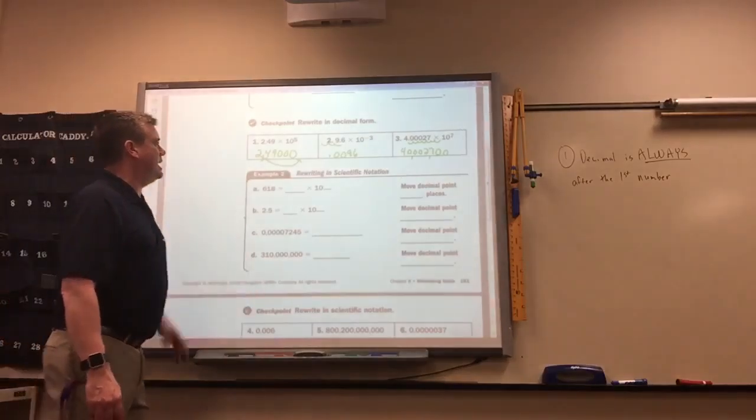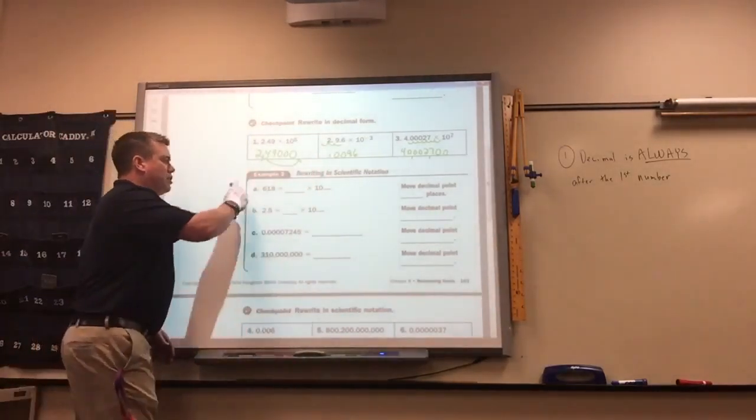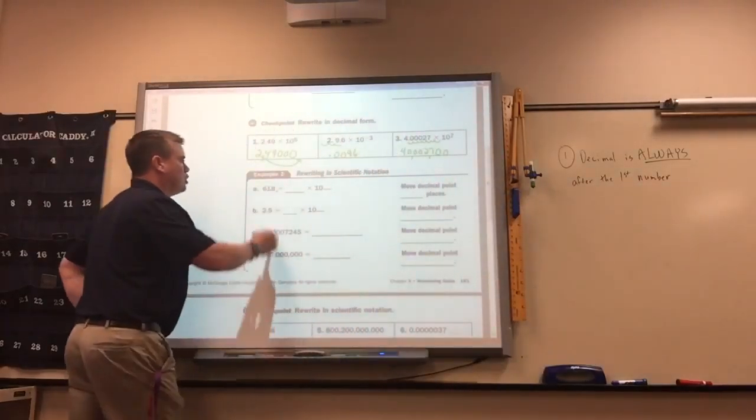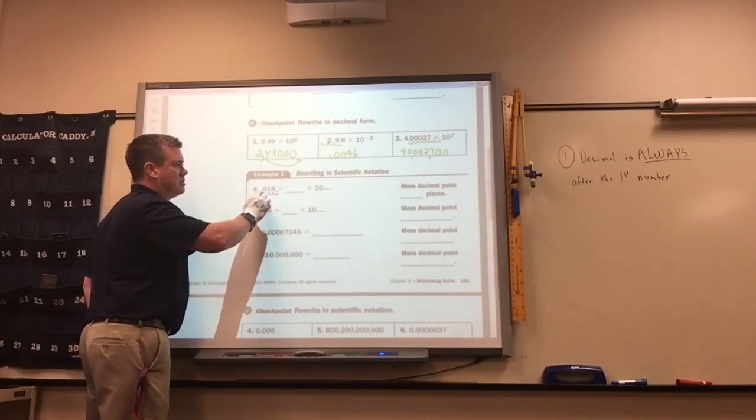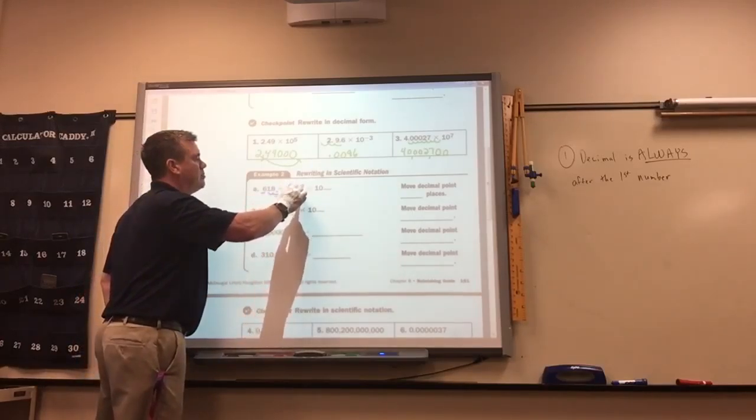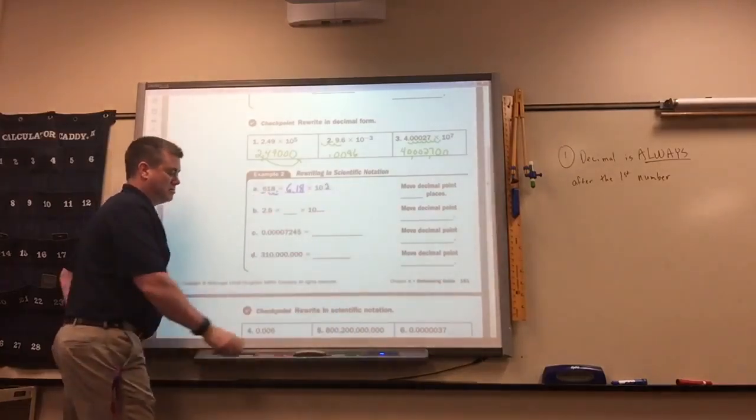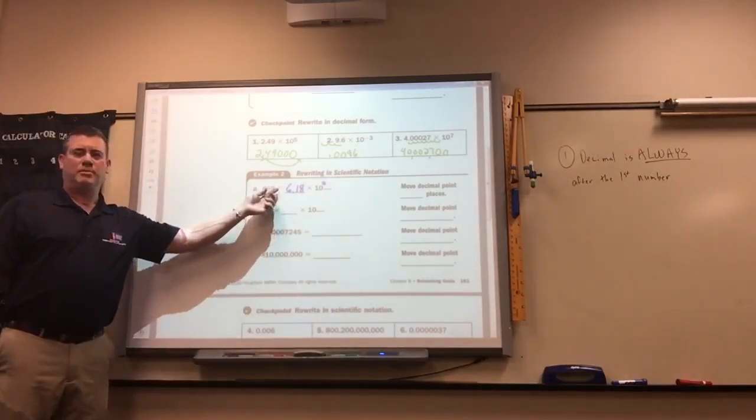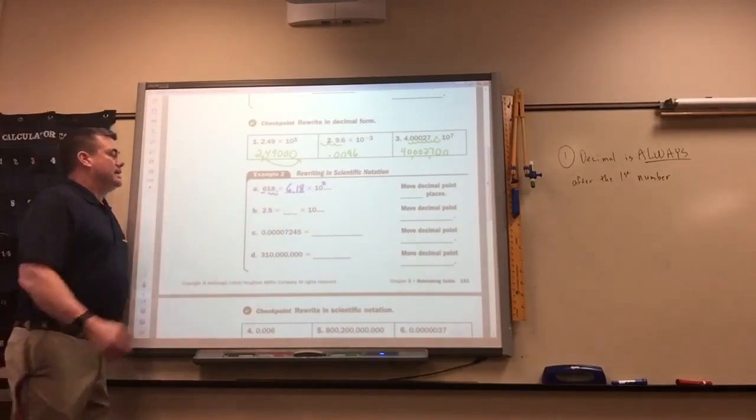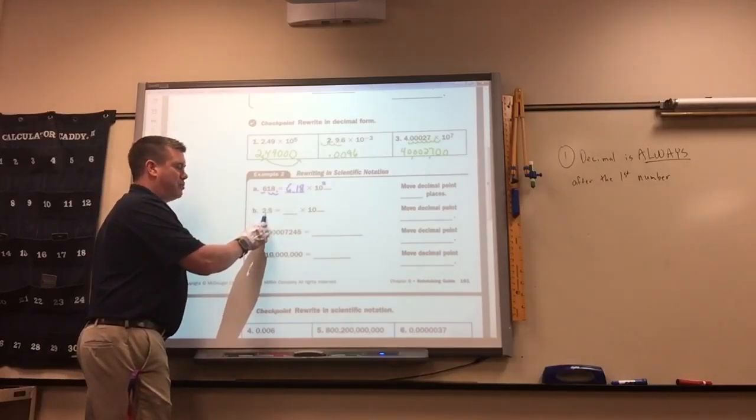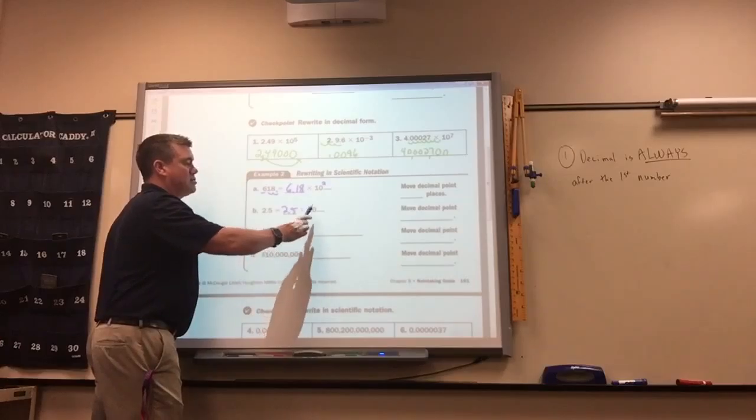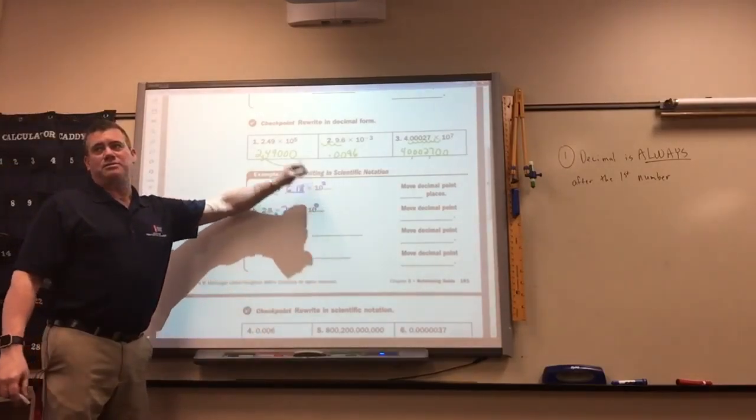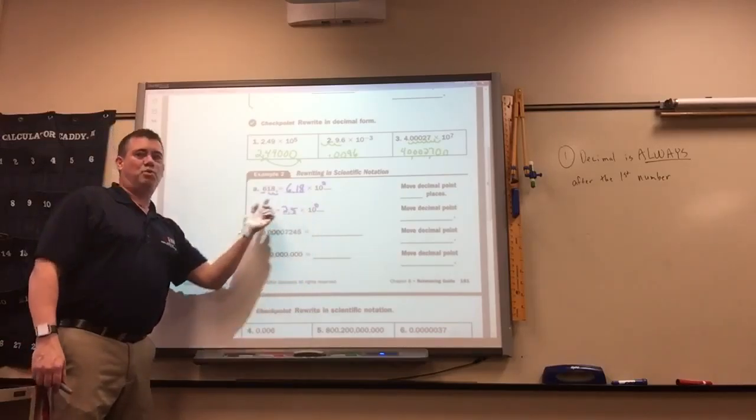So then writing numbers into scientific notation, you just do it backwards. If there is no decimal shown, that means it's at the end. You always want to have it after the first number. So what I got to do is move this so it's after the six. So it'd be 6.18 times 10 to the two. Everyone know how I got a two? Because if it's the decimal, you go two to the right. Because I moved it two spots. So this one, do I have to move the decimal? No. So it just stays 2.5. Since I didn't move it, what would you put? Zero, because I didn't move it. Because what is 10 to the zero? One. So it's just 2.5 times one is 2.5.